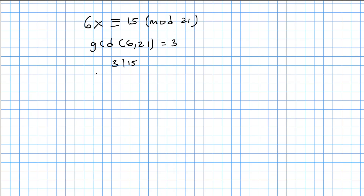Notice that 6, 15, and 21 are all multiples of 3. So if we divide everything by 3, we get 2x ≡ 5 (mod 7).